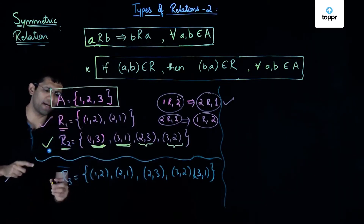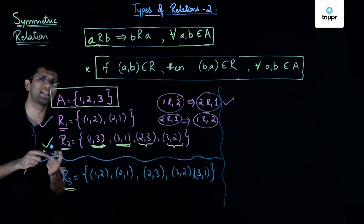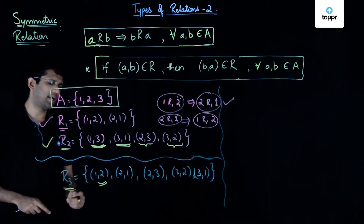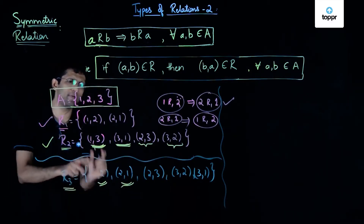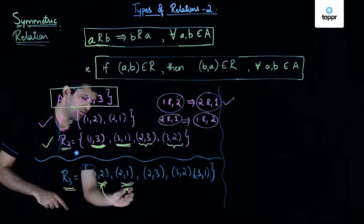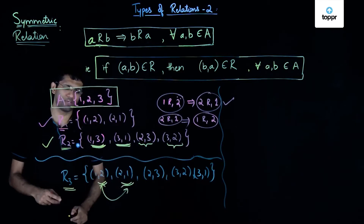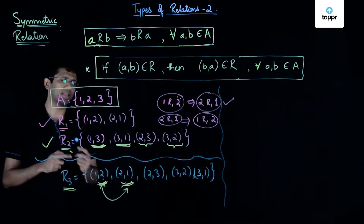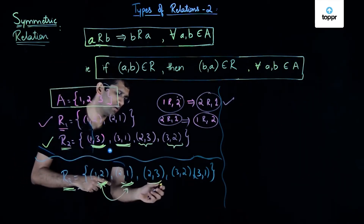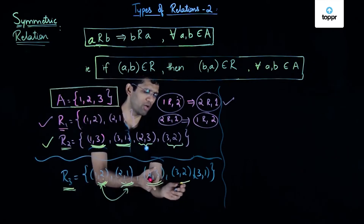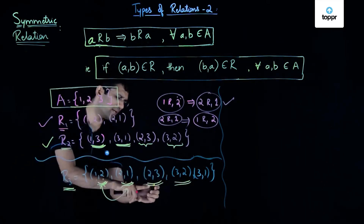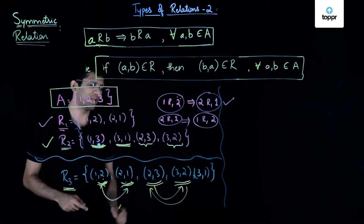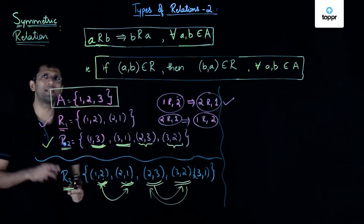Now let us determine if R3 is a symmetric relation on set A. R3 contains (1,2) and (2,1), so (1,2) implies (2,1) and (2,1) implies (1,2) — these two ordered pairs satisfy the symmetric condition. It also contains (2,3) and (3,2), and since (2,3) implies (3,2) and (3,2) implies (2,3), R3 is symmetric for these pairs as well.